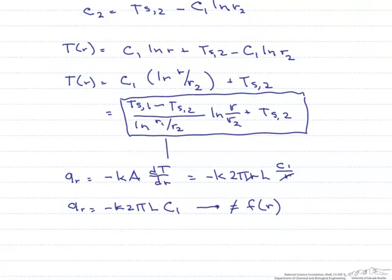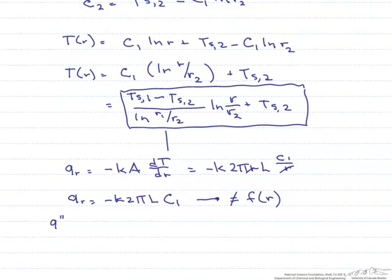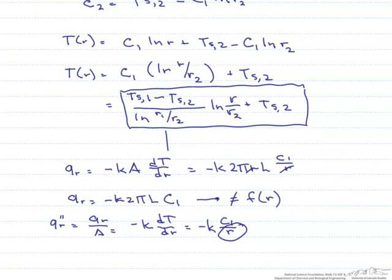Now let's look at the heat flux. The heat flux is defined as the heat transfer rate per area which is now minus k*dT/dr which equals minus k*c1 over r. And look what's happened here. Now our flux is a function of r and therefore we cannot use it to analyze heat transfer through a cylinder.